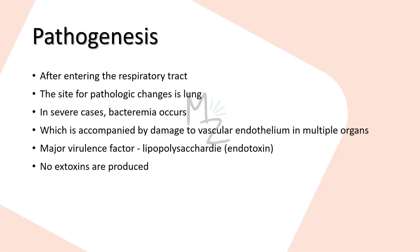Pathogenesis: Legionella enters through the respiratory tract via aerosolized contaminated water, and its site for pathologic changes is the lungs, since it causes lung-associated disease. In severe cases, bacteremia occurs — bacteria from the lung get into the blood — accompanied by damage to the vascular endothelium in multiple organs, especially the brain and kidney. The major virulence factor is its lipopolysaccharide (endotoxin). No exotoxins are produced by Legionella that play a role in pathogenesis.